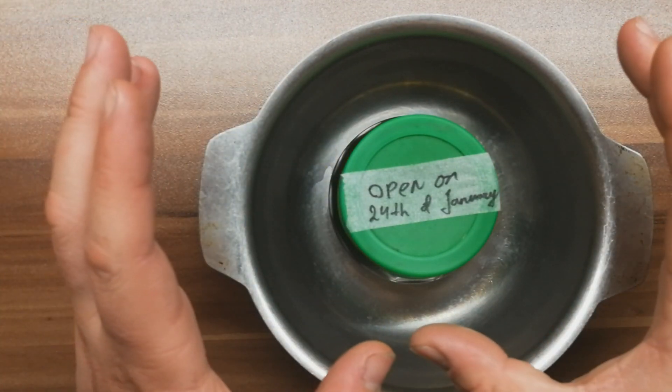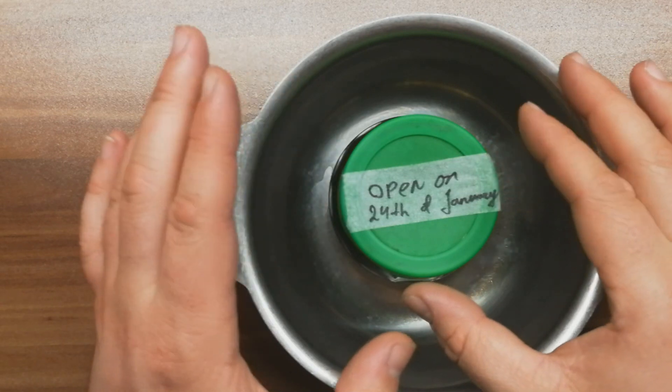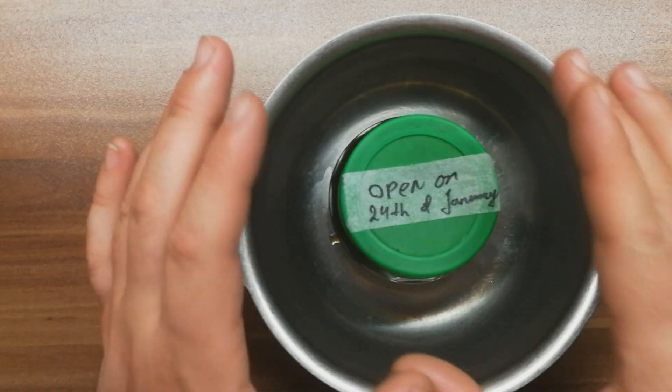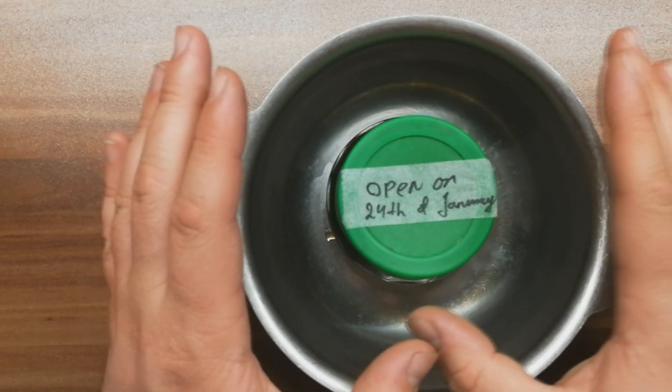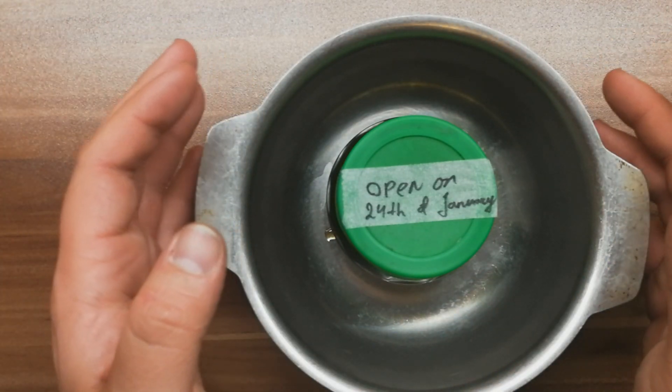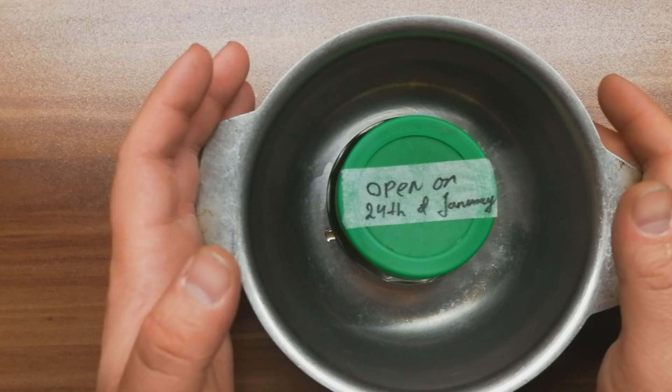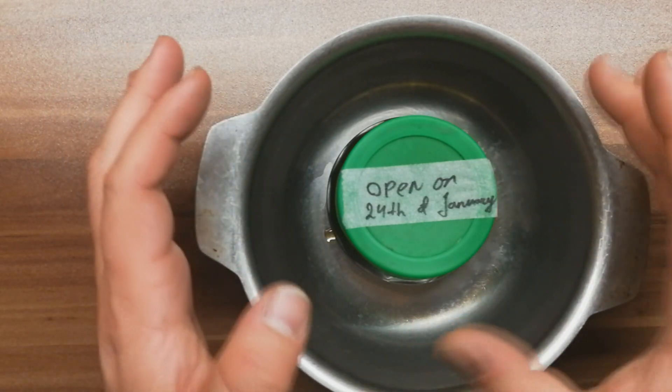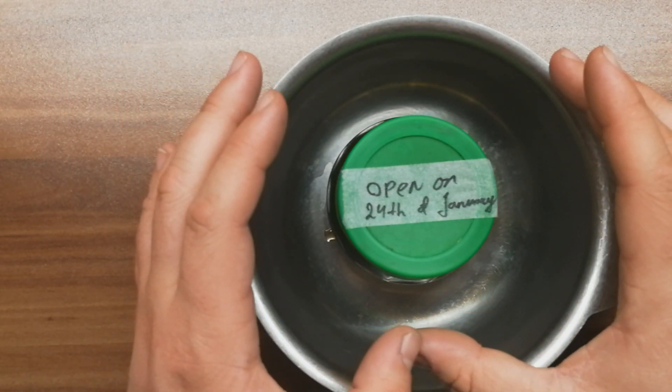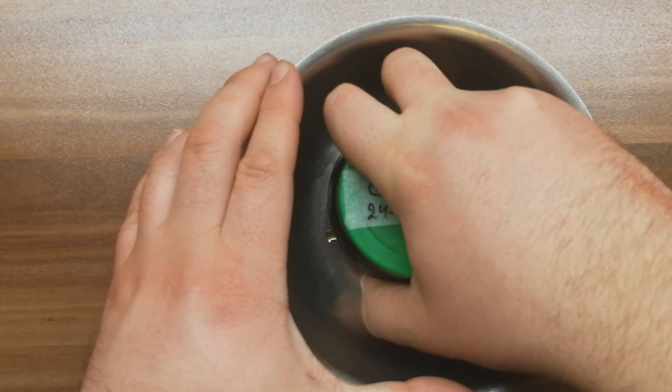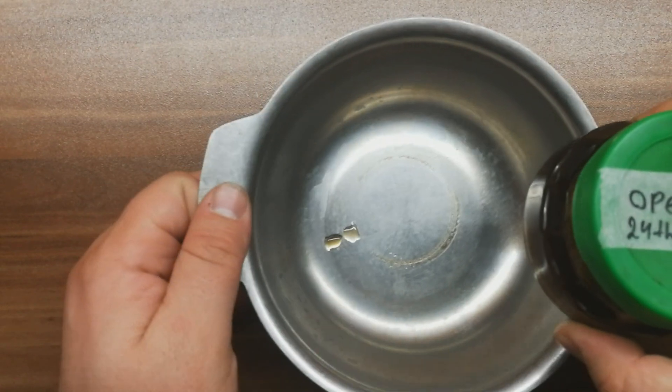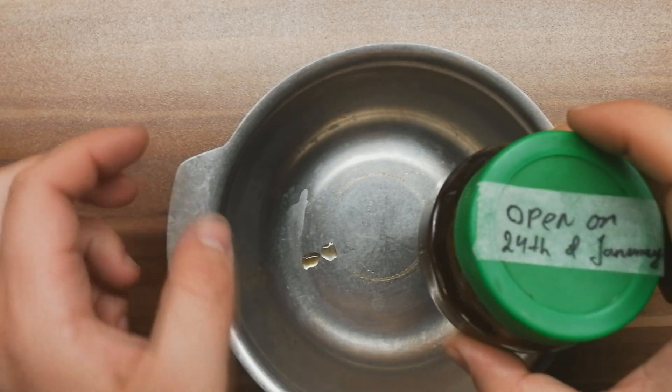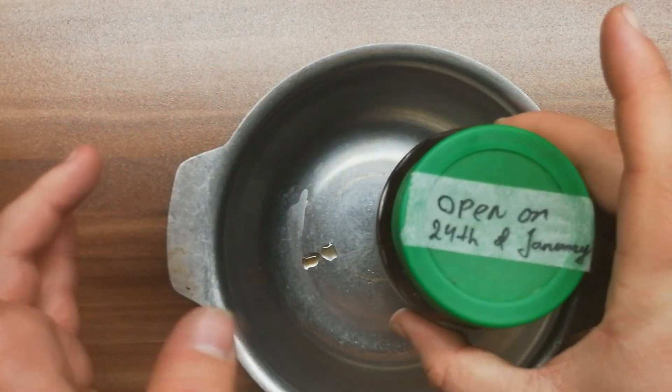At first when I put this Coca-Cola jar on my shelf, I realized after a week when I wanted to take a look it was stuck on the shelf. So I thought that maybe something was leaking, so I put it in a bowl. And now it's completely stuck to this bowl as you can see.